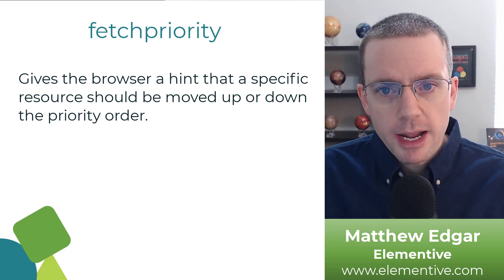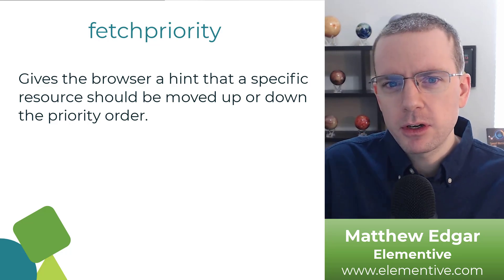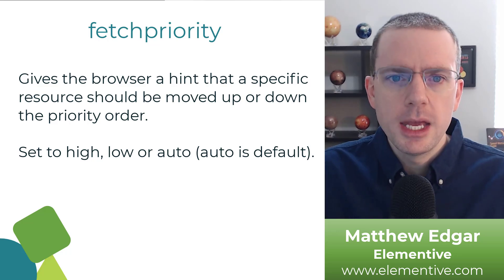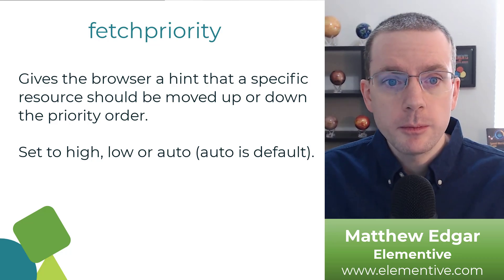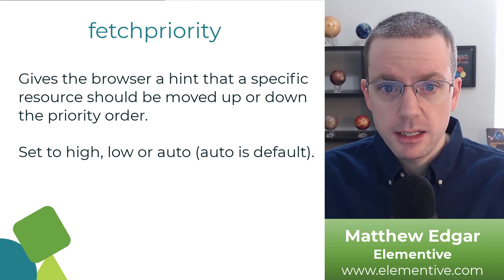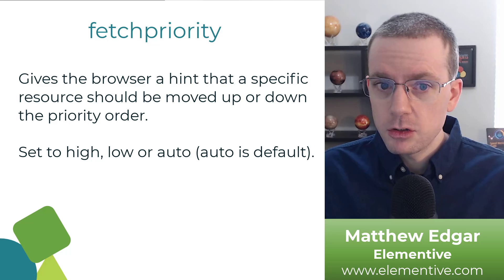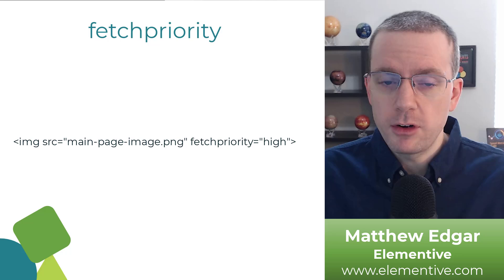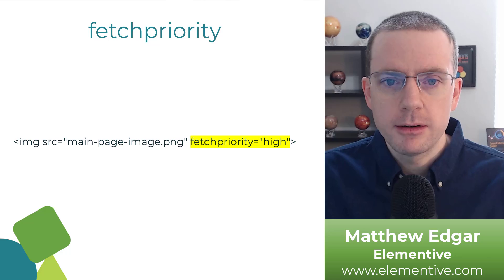Next we have fetch priority. Fetch priority is an attribute you can add that gives the browser a hint that a specific resource should be moved up or down the priority order. You can set this to high or you can set this to low. For example, there may be a particular image that should be given a high priority because of how important it is to the page's content — maybe it's the main image on our page. Keep in mind that fetch priority is only a hint, so the browser can ignore this. This code shows you how you would set the fetch priority of an image — we have our normal image tag with a fetch priority attribute added, in this case set to high.